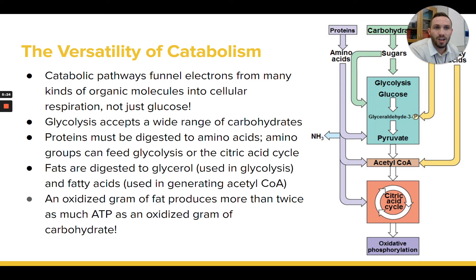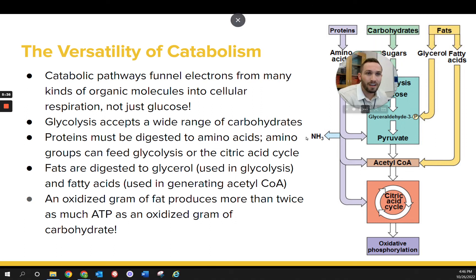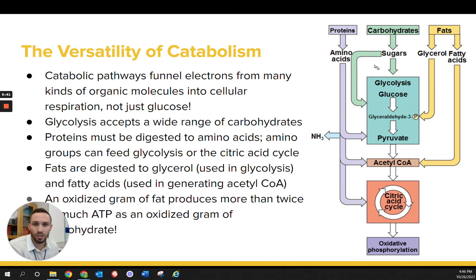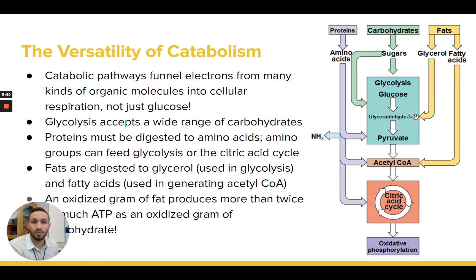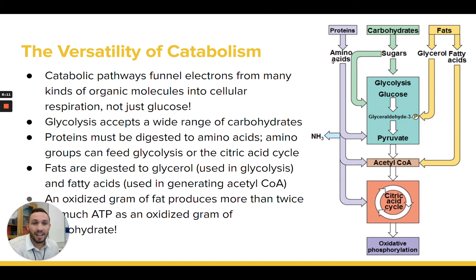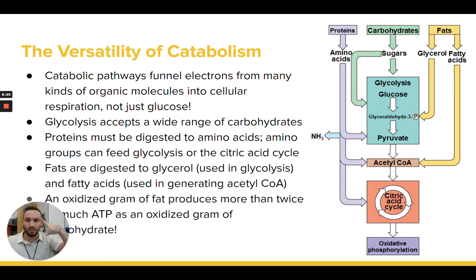Another important point: when we talk about cell respiration, we always talk about starting with glucose or a simple sugar, but it's important to know that your body uses a variety of molecules for cell respiration — it's not just sugar. The majority is carbohydrates and sugars, which are preferred because they most efficiently produce ATP through the processes we covered. But this whole process of cell respiration is a very large metabolic pathway with a huge series of chemical reactions.